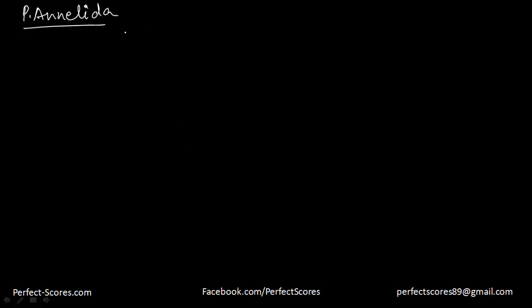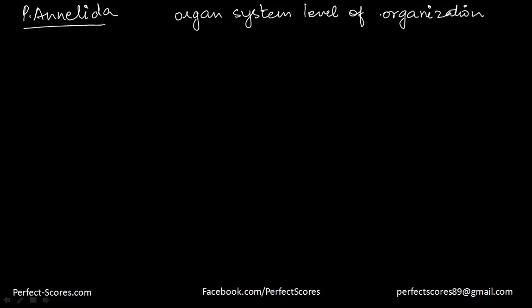The next phylum is phylum Annelida. Just like the previous phylum, organisms of this phylum can live in a variety of conditions: aquatic (both marine and freshwater), terrestrial, free-living, or even parasitic. They have an organ system level of organization. The most common example of Annelida is the common earthworm. They have bilateral symmetry.